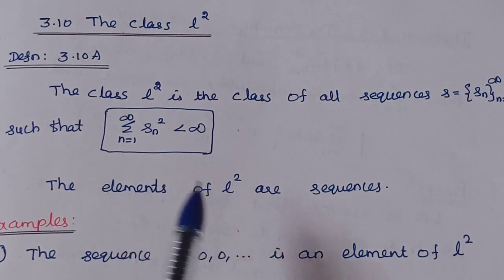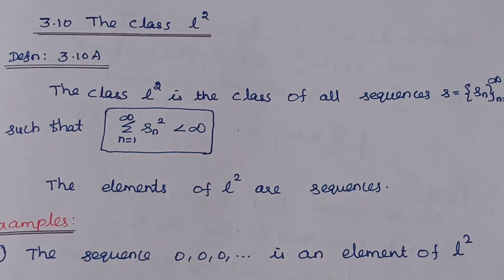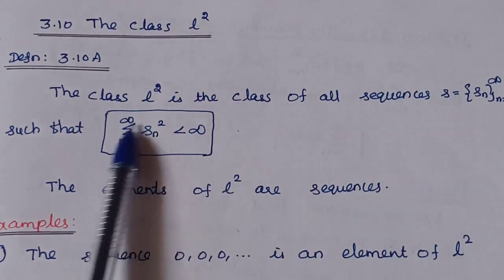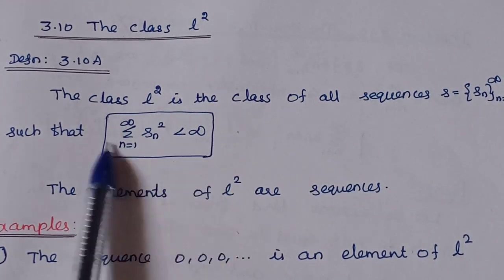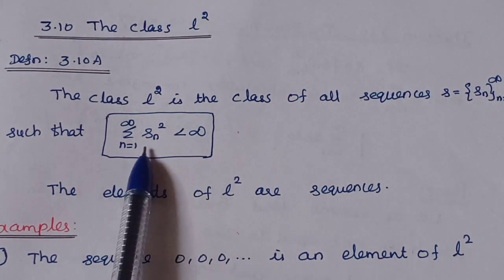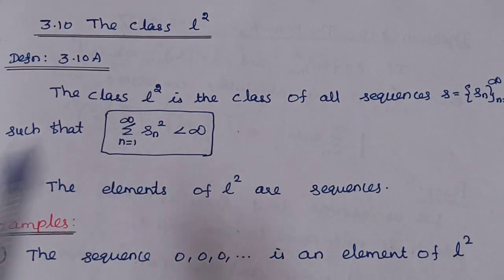The class L2 is the class of all sequences S = {Sn} such that the summation n equal to 1 to infinity of Sn squared is less than infinity. That is, the class L2 is the collection of sequences satisfying the condition that the infinite series summation Sn squared converges. The sequence Sn belongs to the class L2.